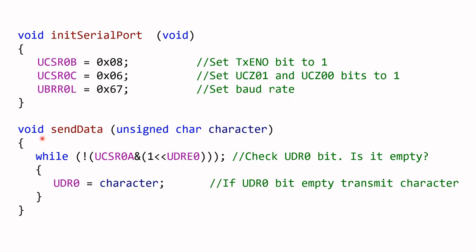Then there is the void send_data function. This line checks the UDRE — the data register empty bit — to see whether it is empty. If the bit is empty, then you transmit the character that is passed into this function from main. So basically these are the two functions declared and used in the main function.